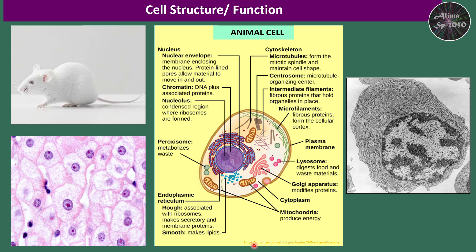The animal cell is delimited by the cell membrane, or plasma membrane, which regulates the movement of substances into and out of the cell, maintains the cell's internal environment, and ensures communication with other cells. Mitochondria — singular: mitochondrion — is a double membrane-bounded organelle known as the powerhouse of the cell. Mitochondria generate energy in the form of ATP through cellular respiration.